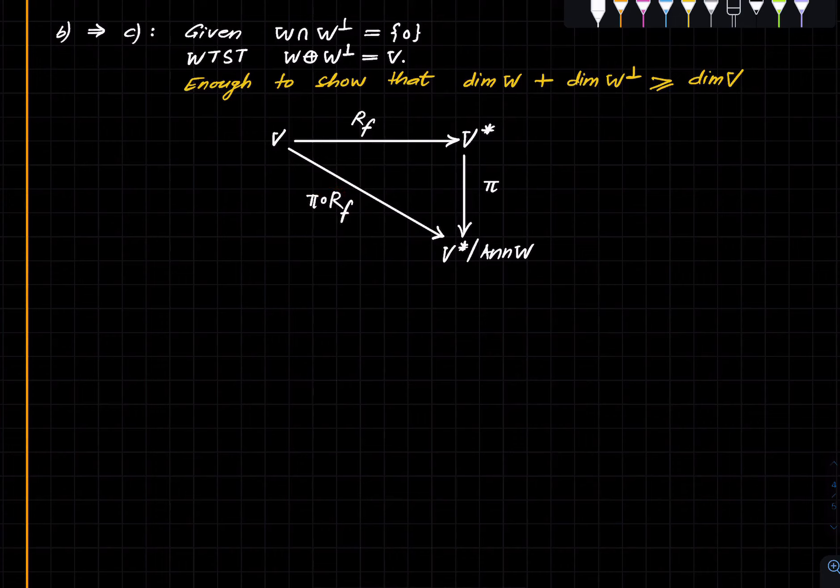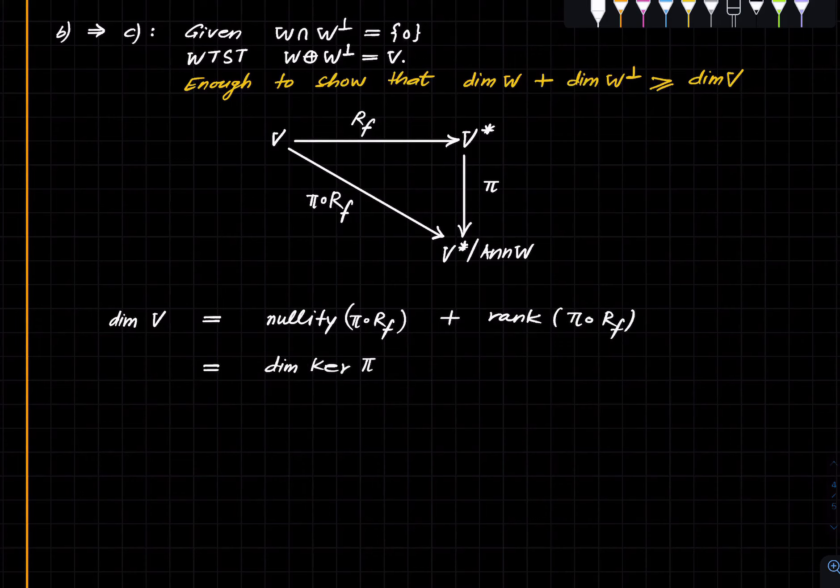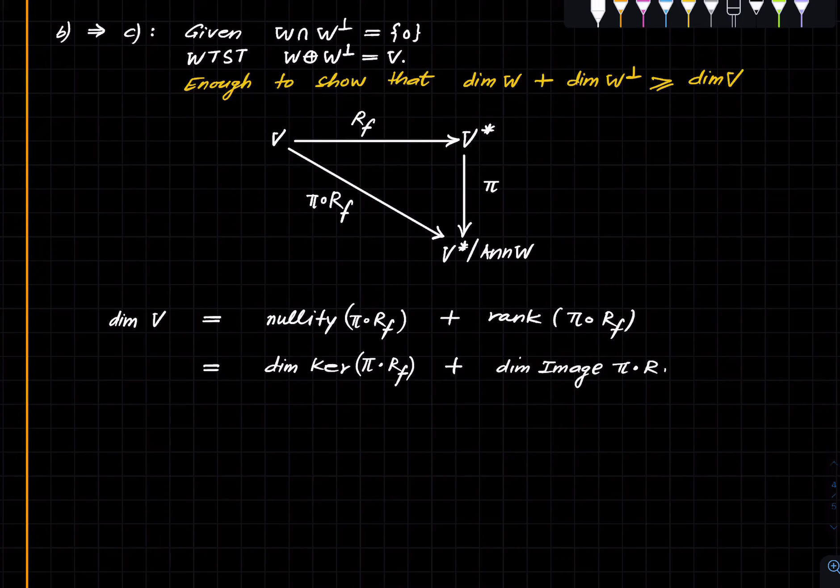By rank nullity, we get that the dimension of V is the nullity of the map plus rank of the map. The nullity is of course the dimension of the kernel and the rank is the dimension of the image. What is the kernel of this guy?